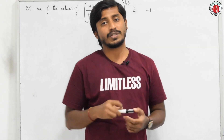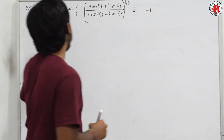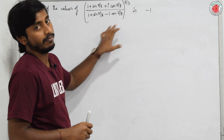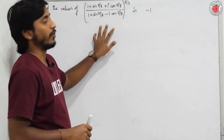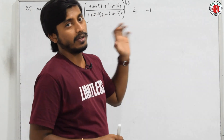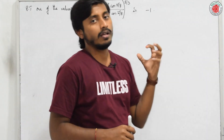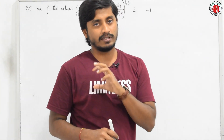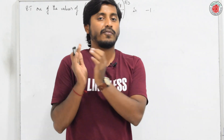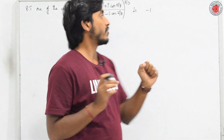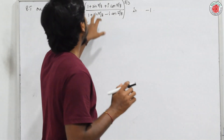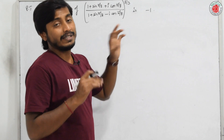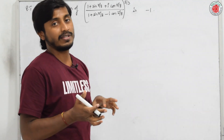The next question asks us to prove that one of the values of a given expression is −1. The key observation is that in De Moivre's Theorem problems, expressions must always be in the form cos + i sin. Here it is sin + i cos, so we must first transform them into cos form.